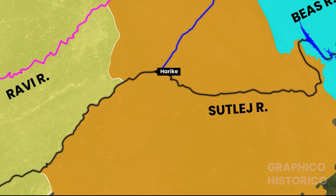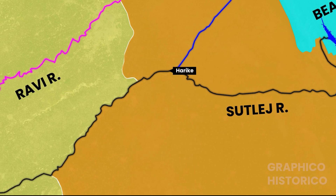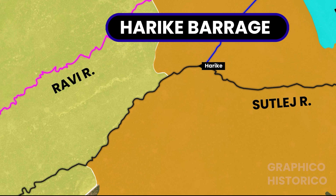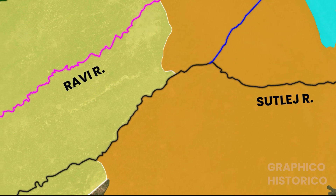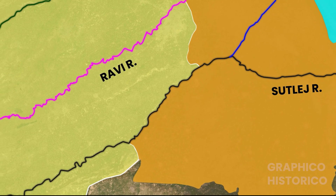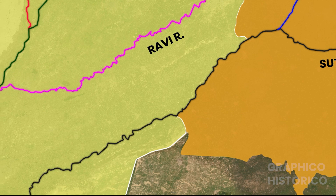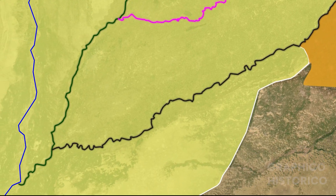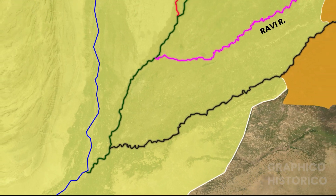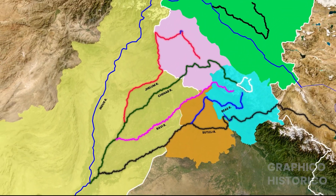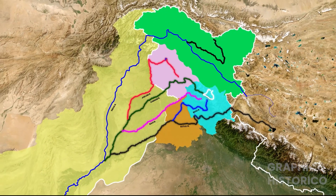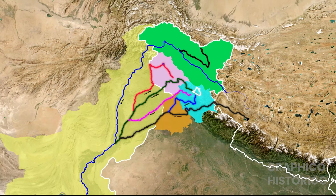At Harike, the Beas meets the Satluj, and the Harike Barrage is also constructed here. The Satluj river then creates the India-Pakistan border and enters Pakistan, after which it meets the Chenab river. This concludes the overview of the whole Indus river system.